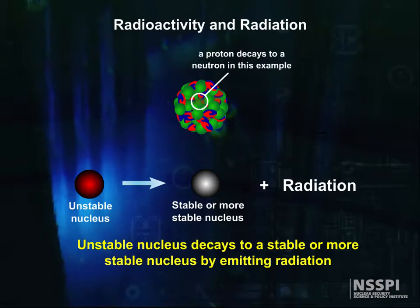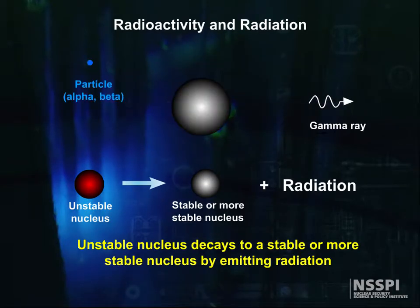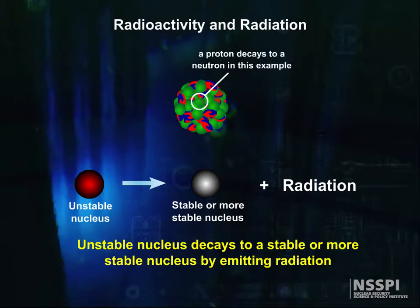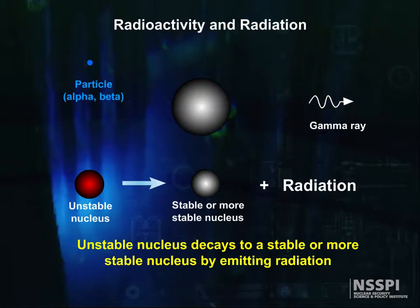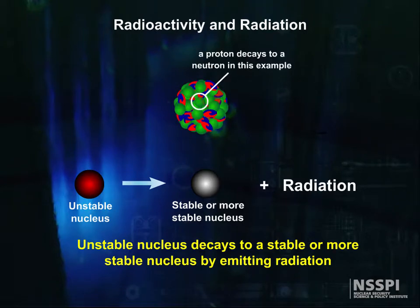Radioactivity is when a nucleus possesses excess energy and decays, meaning it changes its nucleon in some way, to reach a more stable state that has lower energy, usually emitting radiation - that is, some or all of this extra energy - as it decays.